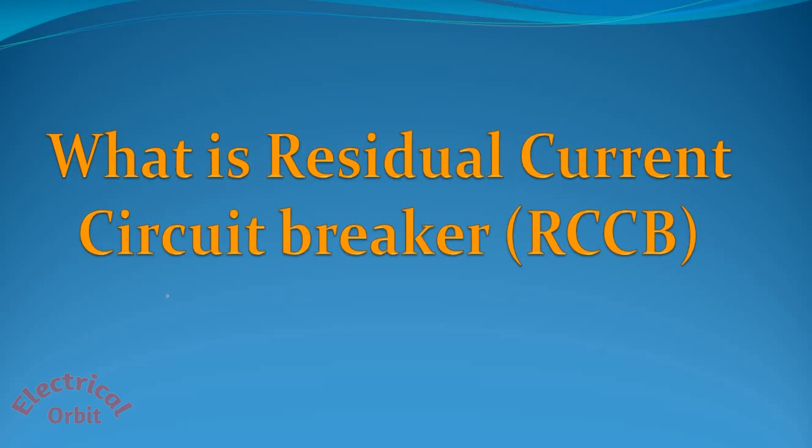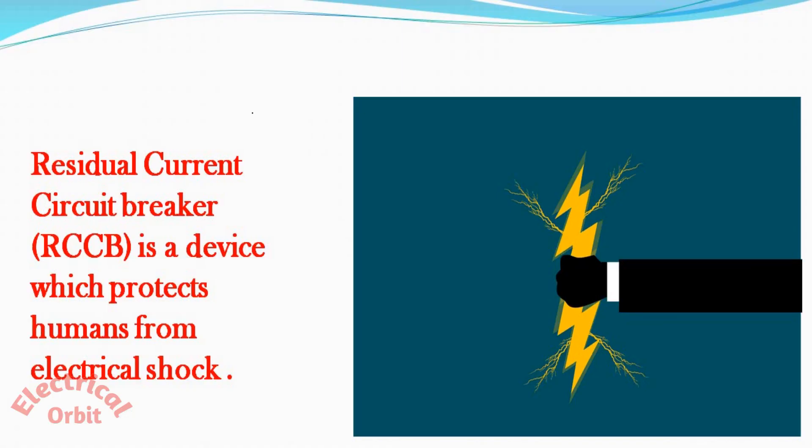In this lecture we are going to understand what is residual current circuit breaker or RCCB, what is the objective of using RCCB in our electrical circuit, as well as the working principle and the types of RCCB in electrical circuits. The main purpose of using RCCB is to protect humans from electrical shock. This is the core purpose.